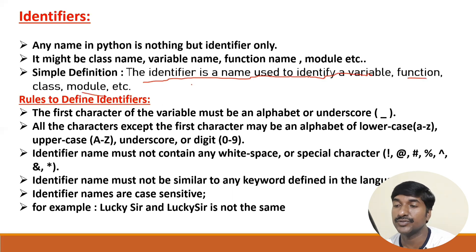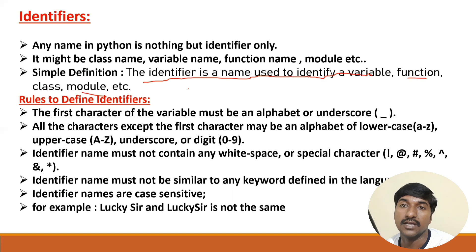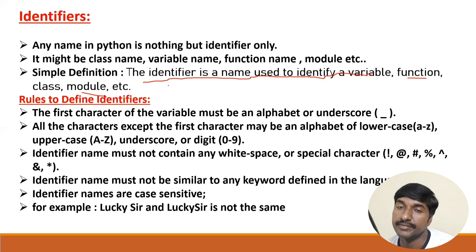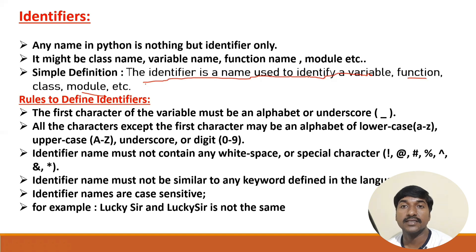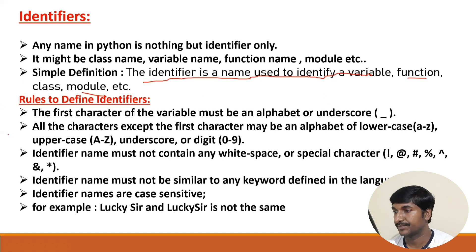What are the rules to define identifiers? First, the first character of the identifier must be an alphabet or underscore. When declaring any variable, the first character must be an alphabet — it may be uppercase or lowercase — and underscore is also allowed as the first character. All subsequent characters may be uppercase or lowercase letters. Only one special character is allowed in identifiers, and that is the underscore.